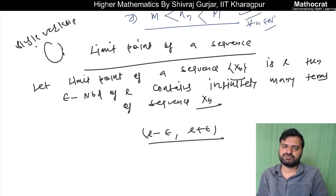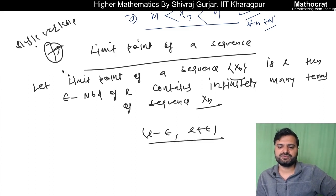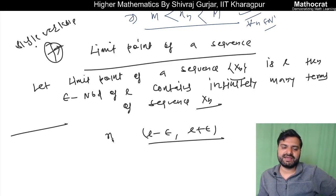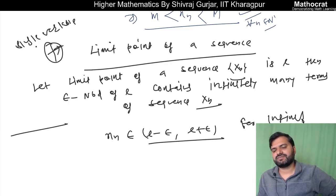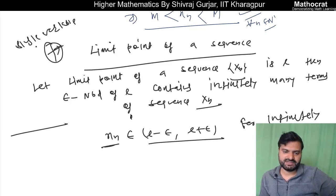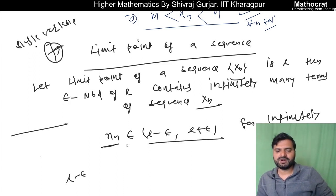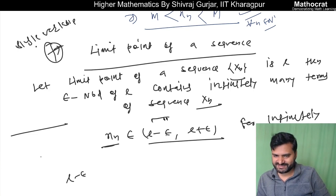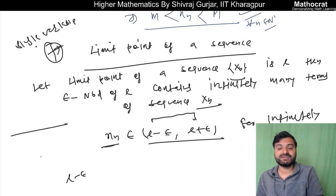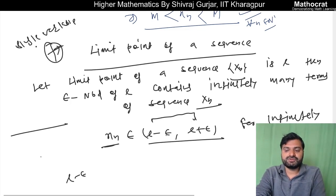In real analysis in one variable, this means that xn should belong to the interval (L minus epsilon, L plus epsilon) for infinitely many n. For a given epsilon, some part of the sequence should lie within this interval. And if we change the value of epsilon, there should still be infinitely many n satisfying this condition. So a limit point can be more than one.